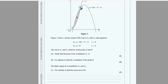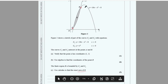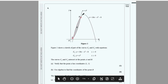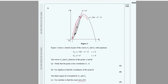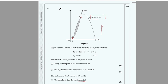For the area between curves question, first solve the equations simultaneously to find the intersecting points. Then integrate (upper curve minus lower curve) between the x-coordinates of the intersection points. Deduct the two equations — for example, one equation minus x³ — and integrate with those limits.